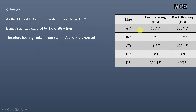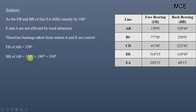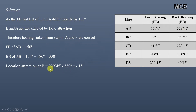The fore bearing of line AB is correct, but the back bearing of AB is not correct — only bearings taken from station A and E are correct. The fore bearing of line AB is 150 degrees. Since the fore bearing is less than 180 degrees, the correct back bearing will be 150 degrees plus 180 degrees, which is 330 degrees. But the observed back bearing of line AB is 329 degrees 45 minutes, meaning there is local attraction at station B. Its value equals observed back bearing minus correct back bearing: 329°45' minus 330°00' equals minus 0°15'.